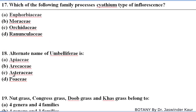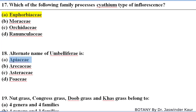Which of the following families possesses cyathium type of inflorescence? Cyathium type of inflorescence is the characteristic inflorescence found in family Euphorbiaceae. The alternate name of family Umbelliferae is family Apiaceae.